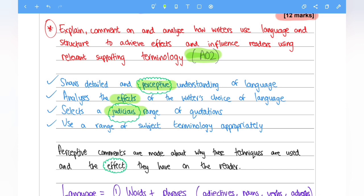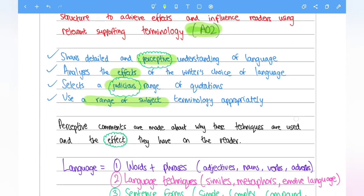And the last one here is use a range of subject terminology appropriately. So when you are analysing language, make sure you are using the correct key terms. If you have a quote and there is an adjective there, make sure you identify the adjective and explain the effect of using that.